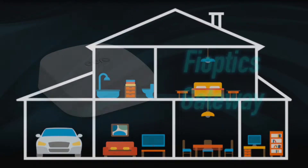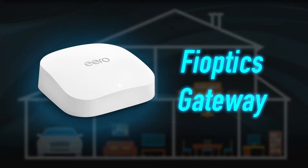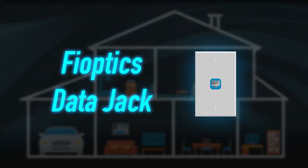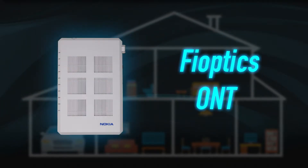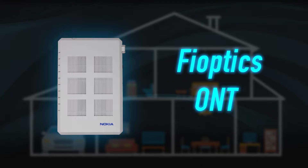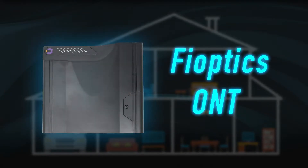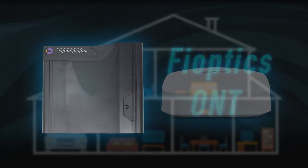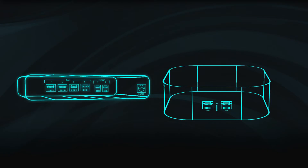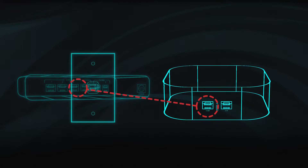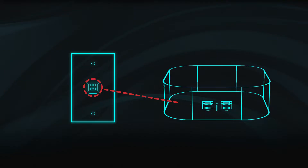Now connect the gateway to the FiOptics wiring in your home. You can usually find the data jack or the ONT in your home office, near the TV, or in the basement. Plug one end of the provided Ethernet cable into the 2.5 Ethernet port on the back of the gateway, and the other end into port 1 on the ONT or into the data jack.